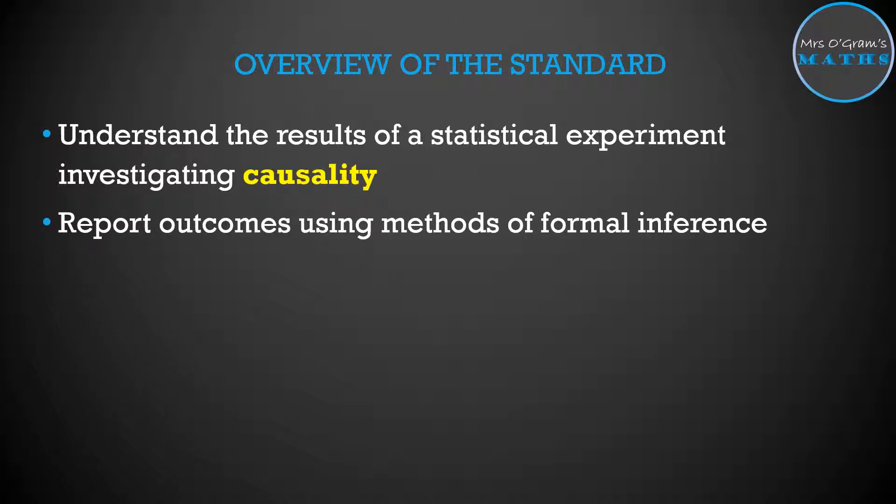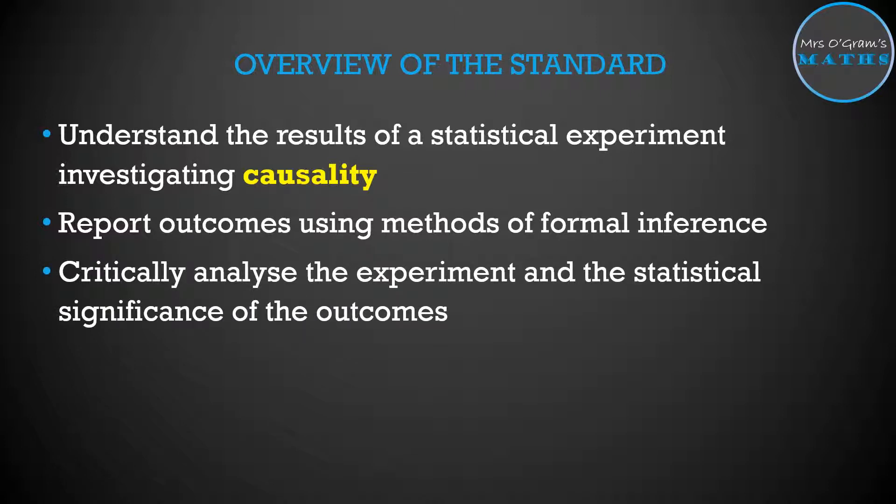You report outcomes using the same sorts of methods that you use for the formal inference standard. If you haven't studied that yet, you might want to go away and have a look at formal inference first. It might make the rest of this experiment standard a bit easier, but you should be able to just get on with experiments by itself as well. You are going to critically analyze an experiment and the statistical significance of the outcome. This is what separates people who do stats from just your everyday Joe, is that you can talk about statistical significance and doing some calculations that say whether the outcomes we've got are actually statistically significant or not for us to be able to make calls from them.